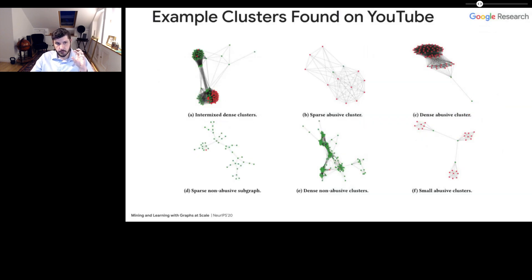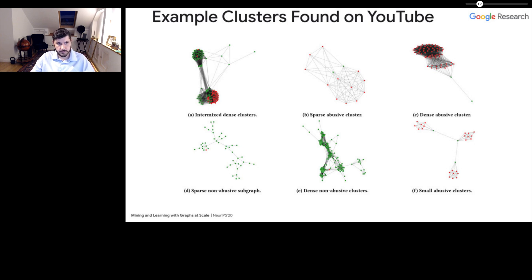Looking at zoomed-in pictures of different subgraphs, you can see a bunch of interesting structures. In some cases there are very dense clusters of abuse, and sometimes more sparse structures corresponding to non-abuse. Occasionally there's intermixing where you have a dense cluster that's mostly abusive with some connections to non-abusive clusters, and sometimes small abusive clusters that are loosely connected with each other. There's really a whole bunch of different types of behavior we observe on this graph.